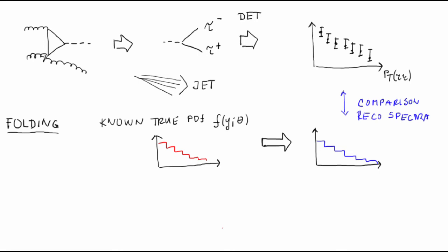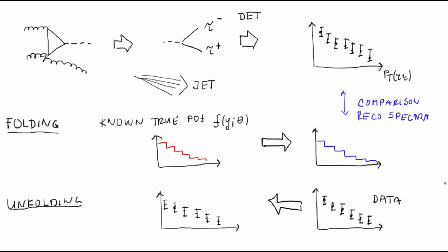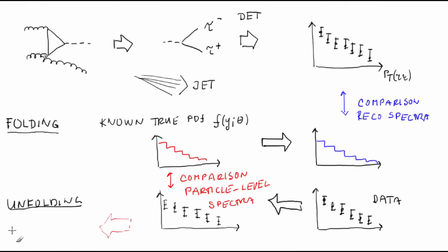In contrast to that, the true PDF of the unfolded data are often called truth or particle-level spectra. The level of stable particles is the most common one to which you unfold. Rarely, you might also want to unfold to the parton level. However, be careful about that, because you aren't unfolding just detector effects, but also a tricky physics process.